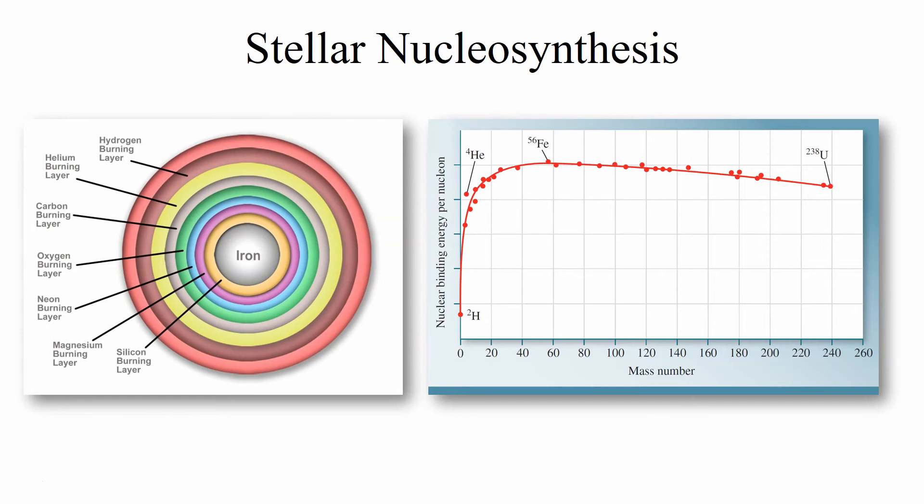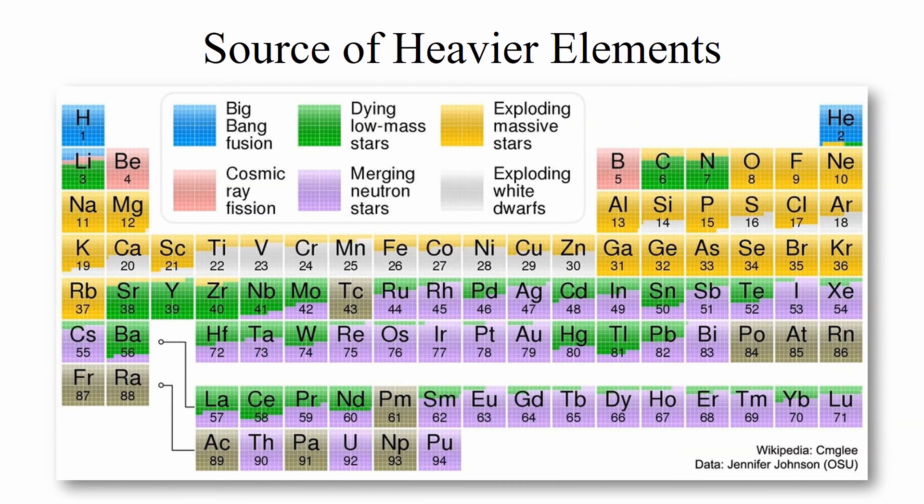But one thing that should be noted is that once you hit iron the amount of energy you get out goes way down. In fact the synthesis of heavier elements essentially ends with the formation of iron-56 inside stars. That's because the combination of nuclei now requires energy rather than giving it off.